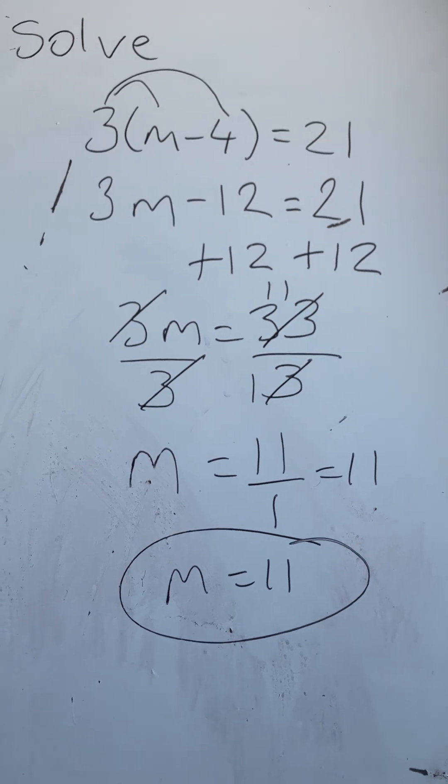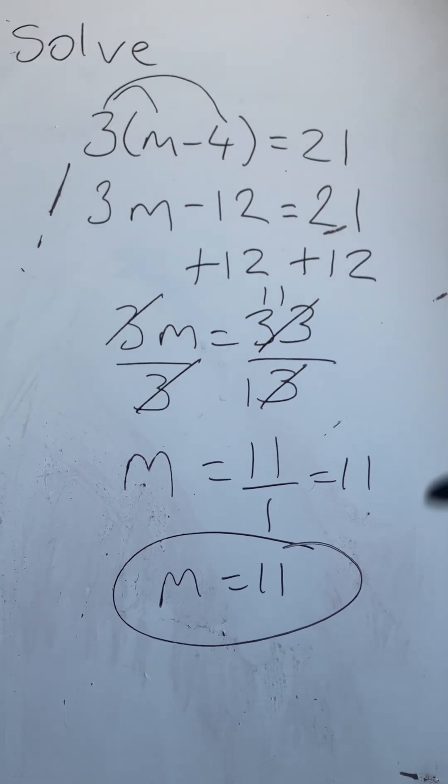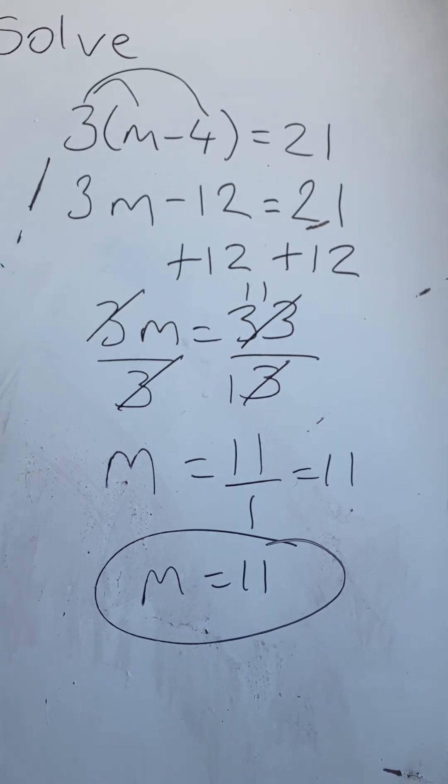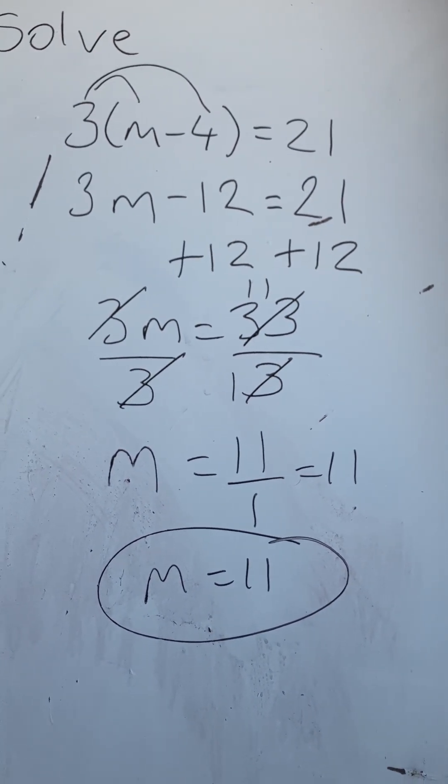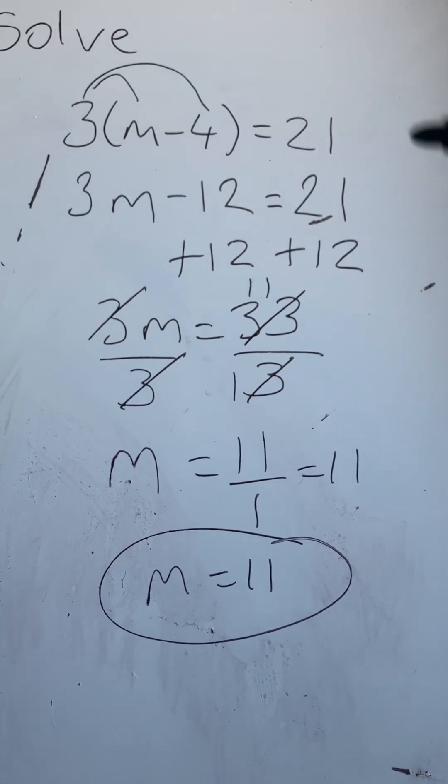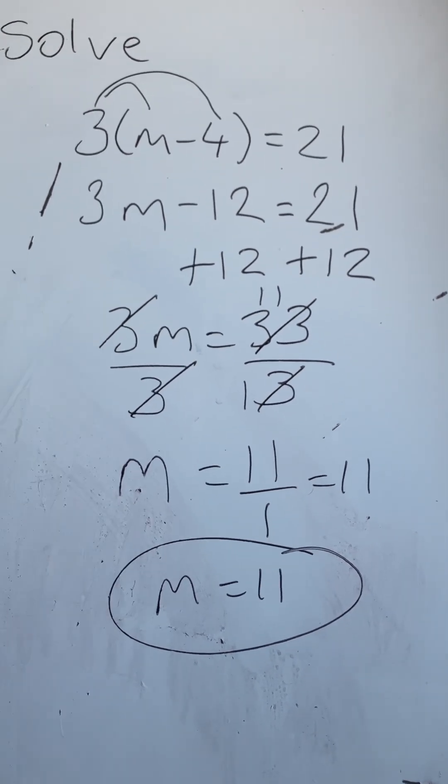So you'll get some improper fractions to deal with. But you can divide both sides of the equation by 3 from this step here. And get m subtract 4 is equal to 7. And then add 4 to both sides and you get m is equal to 11. But this way is a much preferred way guys for your exam.